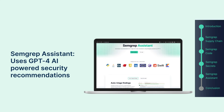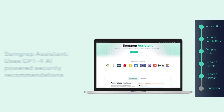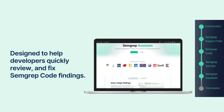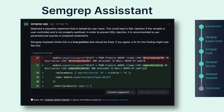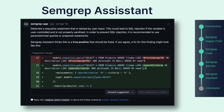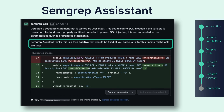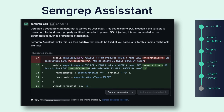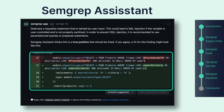Semgrep Assistant provides GPT-4 powered security recommendations designed to help developers quickly review and fix security findings from Semgrep Code. In this example, Semgrep detects a SQL injection, and that's correct — this is a real vulnerability. Semgrep Assistant comments agreeing that this is a true positive and should be fixed, and it can also suggest an auto-fix code snippet to help the developer remove the vulnerability.